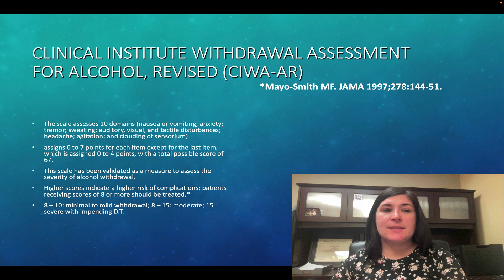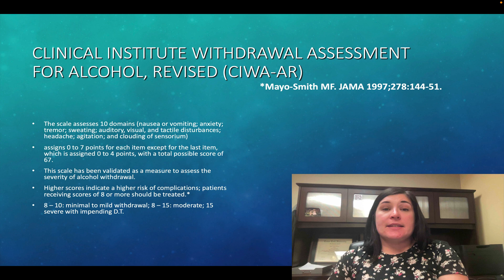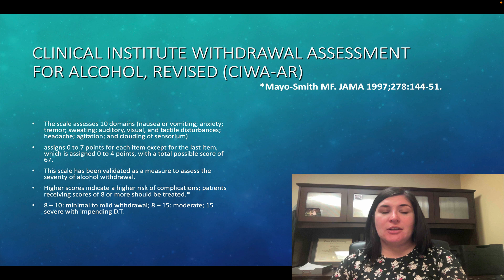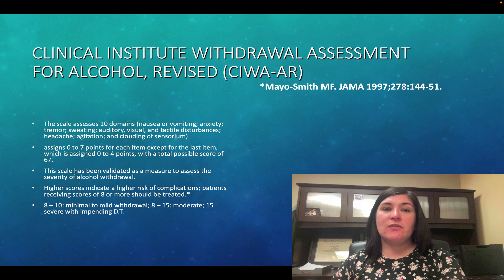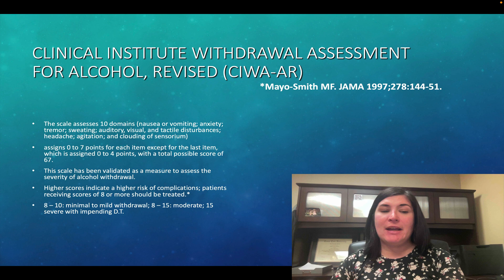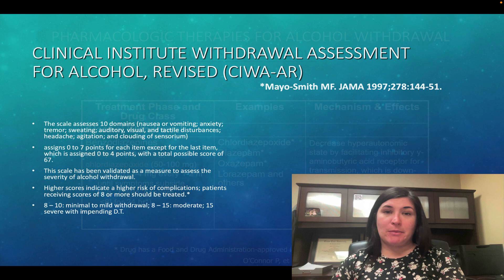One assessment is called the Clinical Institute Withdrawal Assessment for Alcohol, or CIWA. This scale assesses ten domains like nausea, vomiting, anxiety, sweating, tactile disturbances, etc. It assigns a score of zero to seven for each item except the last item, which is zero to four, for a total of about 67. The scale has been validated to assess severity of alcohol withdrawal — higher scores indicate higher risk for complications. Patients receiving scores of eight or more should probably be treated for withdrawal symptoms: eight to ten is minimal to mild withdrawal, eight to fifteen is moderate, and fifteen or above indicates impending delirium tremens.